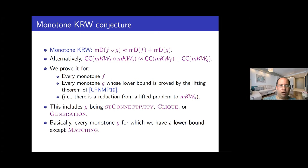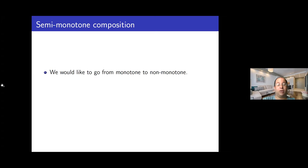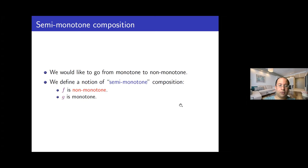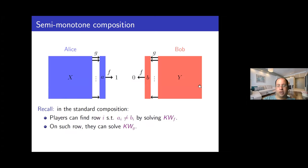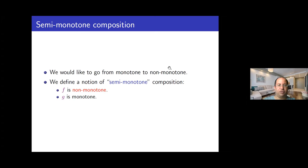The monotone KRW conjecture is a very interesting conjecture in its own right and a good stepping stone toward the non-monotone KRW conjecture. But what we really want to do eventually is go to the non-monotone setting. So it would be more interesting if we could prove something about non-monotone functions. In order to make some step toward the non-monotone setting, we introduce a new setting called the semi-monotone setting or semi-monotone composition.